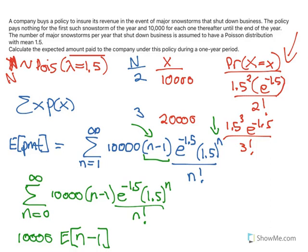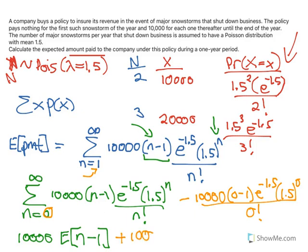However, there's one of these terms that actually shouldn't be included, and that's when N equals 0, right? Because we actually should be starting at 1. So if I just back off the term where N is 0, you can sub in 0, and you get N minus 1. So 0 minus 1, E to the negative 1.5, 1.5 to the 0 over 0 factorial. So I've just backed that out of the sum, and that's really easy because that just becomes minus... Actually, it's going to become plus 10,000 because it's minus 10,000 times minus 1, E to the negative 1.5.